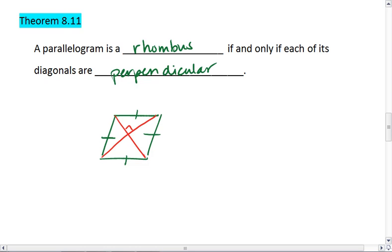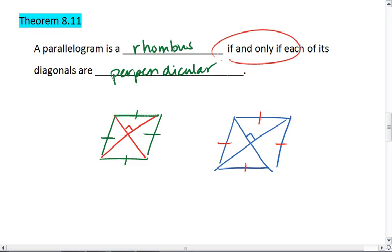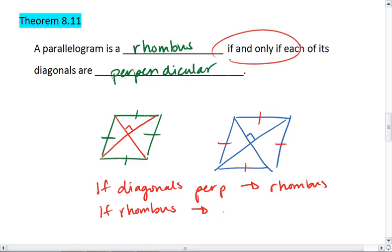Also, this works the other way. If we have a figure in which the diagonals are perpendicular, then it must be a rhombus. That's what we mean by if and only if. It means if diagonals are perpendicular, then it's a rhombus. It also means if it's a rhombus, then diagonals are perpendicular.